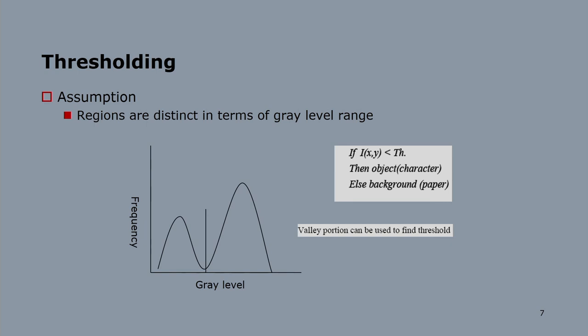For thresholding, here I have shown the image histogram. The x-axis is the gray levels and the y-axis is the frequency. Based on this algorithm, if i(x,y) is less than the threshold, then the object — for example a character — is detected, and otherwise the background — the paper — is detected. Suppose a paper has a white background and I am writing black characters. In the histogram the black portion has fewer pixels than the white background region.